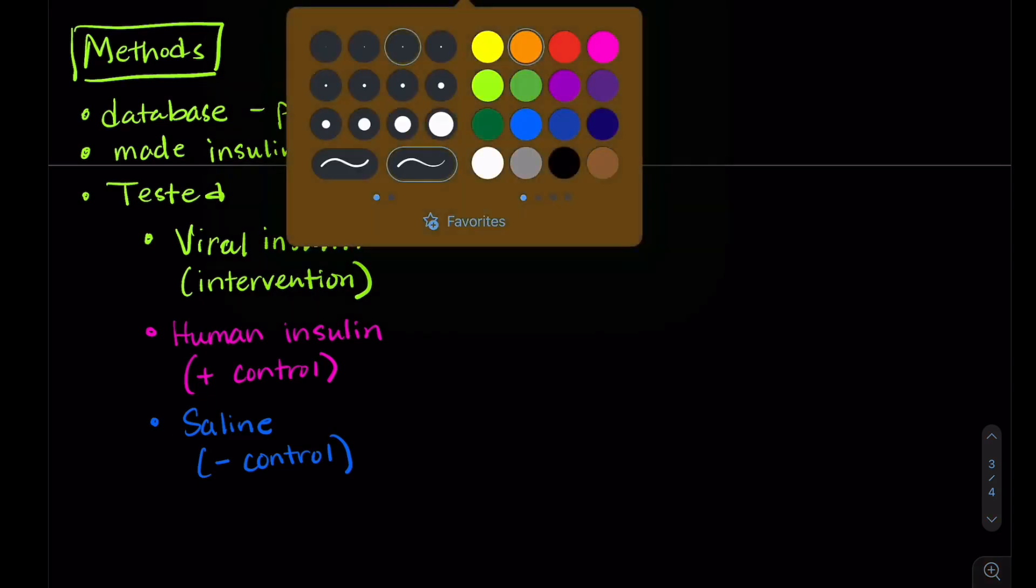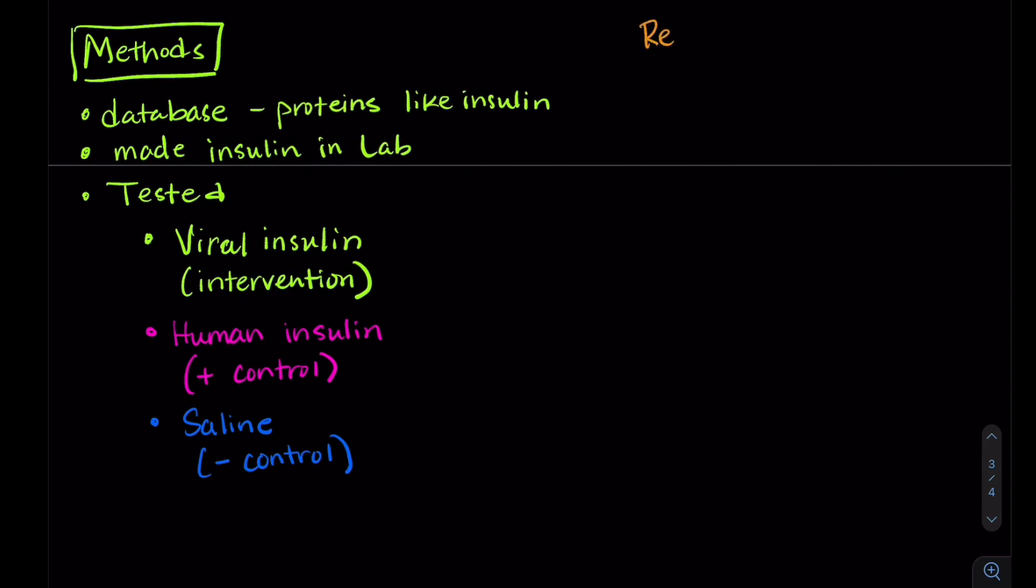So what did they find? Let's look at our results. Okay, so when they looked in the database, they found some proteins that were like insulin, that viruses made. They made those in the lab. They compared the structure. Their viral insulin shared about 50% of the same structure as our human insulin. So because the structure is pretty similar, it probably works in the same way as human insulin. So they thought it might have some of the same functions.